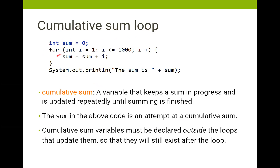If we declare it inside the for loop — which is a very common error — putting int in there means the sum variable comes into existence and then dies every single time we loop. It gets born and then it gets buried every iteration, and it doesn't stay alive long enough to print our sum. So we declare our result outside, then do our loop for however many times we want.